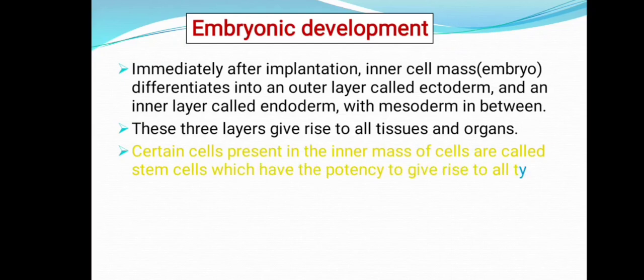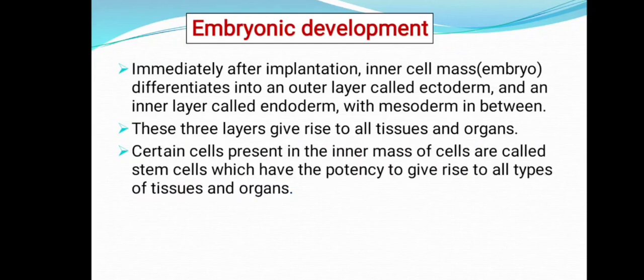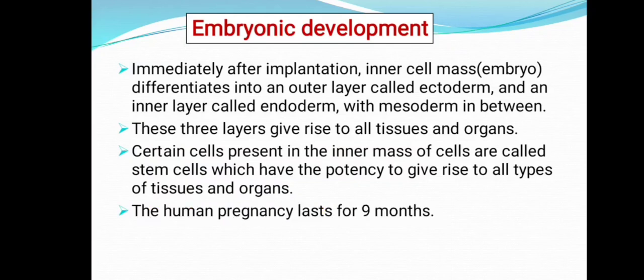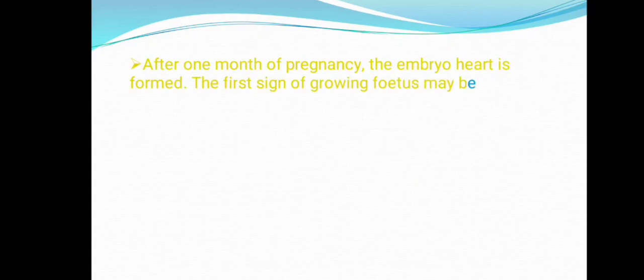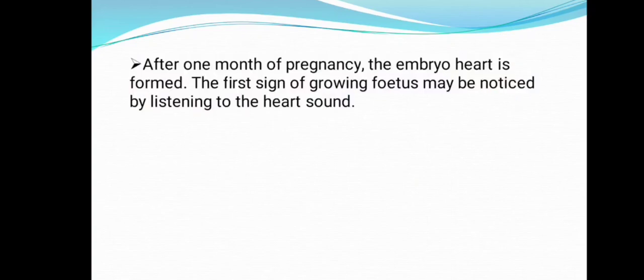Certain cells present in the inner mass of cells are called stem cells, which have the potency to give rise to all types of tissues and organs. Human pregnancy lasts for nine months. After one month of pregnancy the embryo's heart is formed, and the first sign of a growing fetus may be noticed by listening to the heart sound.